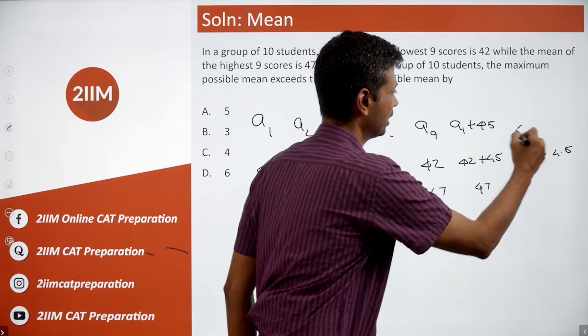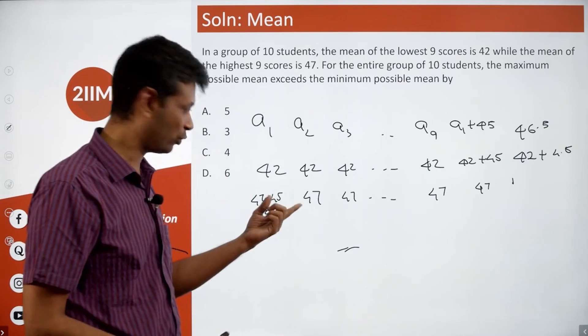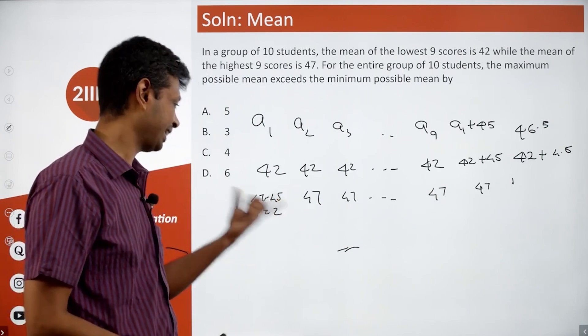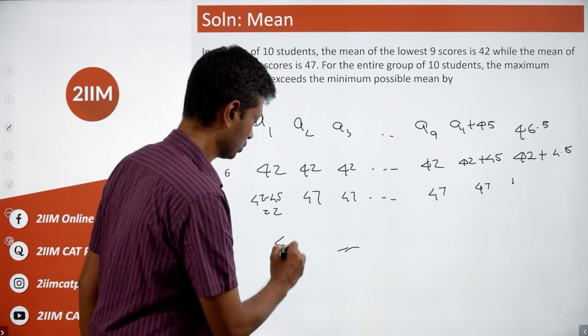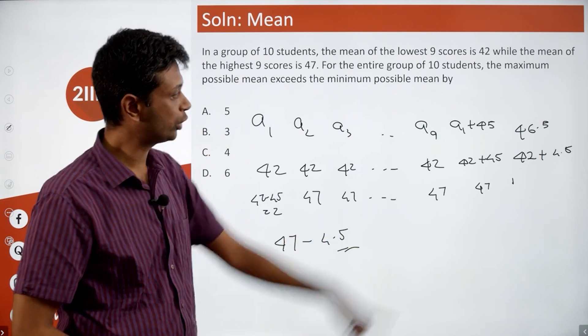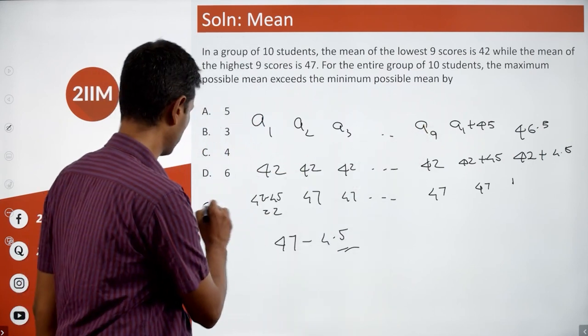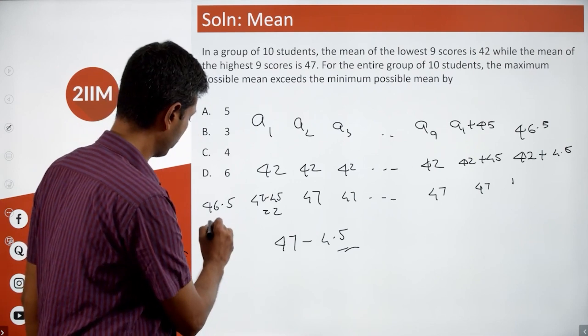For the other case, there are 9 instances of 47, or 10 forty-sevens minus a 45. This average will be 47 minus 4.5. 42 plus 4.5 equals 46.5. This is 47 minus 4.5, which is 42.5.